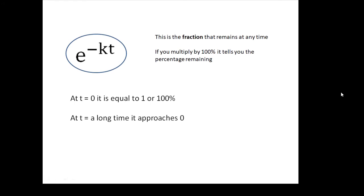On the first day, or rather at the beginning, e to the minus kt equals 1, because t is 0, and e to the 0 is 1. After a long time, it gets smaller and smaller. It falls exponentially. After a very long time, it's approaching 0. There's very little left. So that's a useful thing to remember. e to the minus kt is the fraction that is remaining.